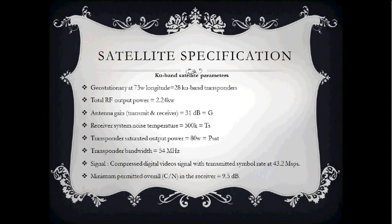For satellite specification, we have KU-band satellite parameters. For a geostationary satellite at 73°W longitude with 28 KU-band transponders: total RF output power is 2.24 kW, antenna gain for transmitter and receiver is 31 dB, receiving system noise temperature is 500 K, transponder saturated output power is 80 W, transponder bandwidth is 24 MHz, compressed digital video symbol rate is 43.2 MSPS, and minimum permitted overall C/N in the receiver is 9.5 dB.